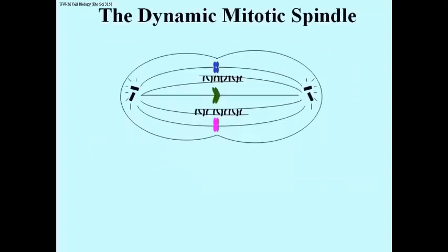The spindle apparatus is made up largely of microtubules. In this cartoon, you will see microtubules that extend from the centrioles of this animal cell towards the metaphase plate.